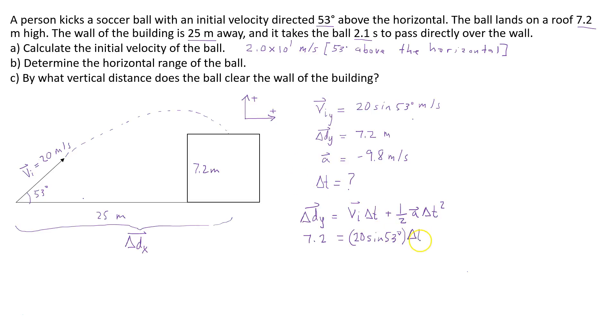plus 1 half times negative 9.8 times delta t squared.